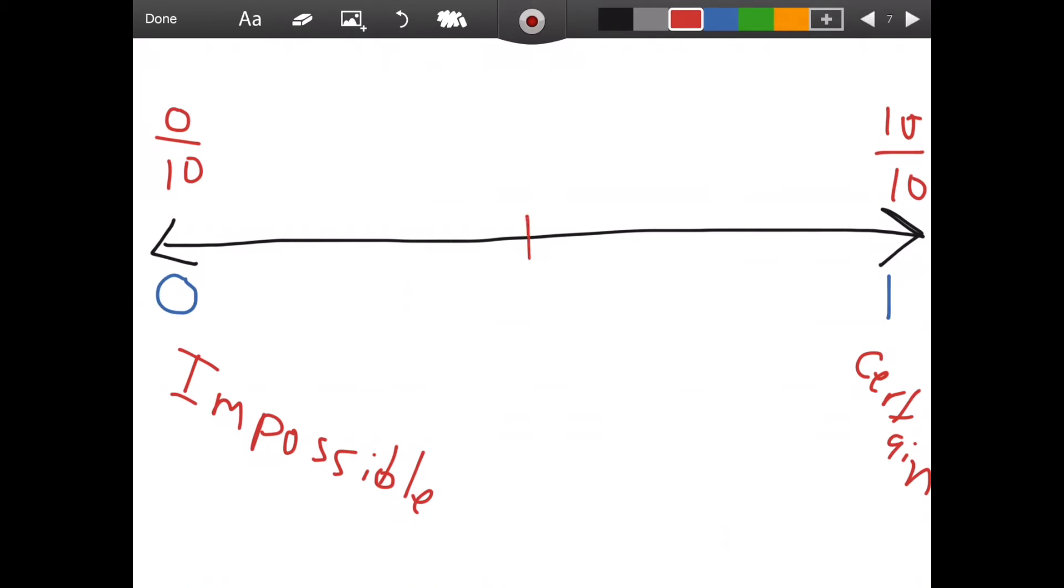If we go to the center of our number line, we know that that would be a half or 5 tenths. These are things that are equally likely. That means that it's going to happen half of the time. It's not going to happen half of the time.